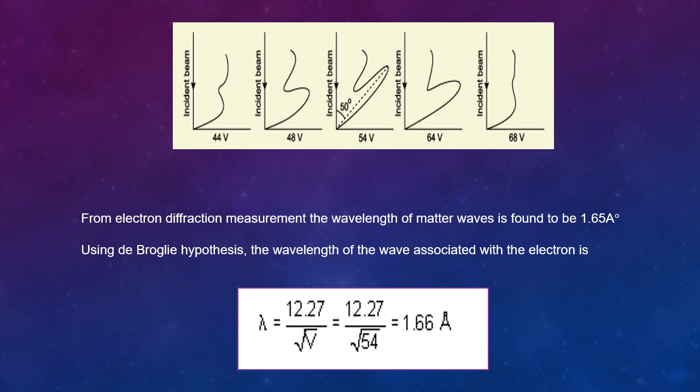From electron diffraction measurement, the wavelength of matter waves is found to be 0.165 nanometer. The de Broglie wavelength associated with electrons for voltage 54V is given by λ = 1.227/√V nanometer. Substituting V as 54, we get λ = 1.67 angstrom or 0.167 nanometer. That is, there is an excellent agreement between theoretical and experimental value of de Broglie wavelength. So this experiment confirms the wave nature of electrons.